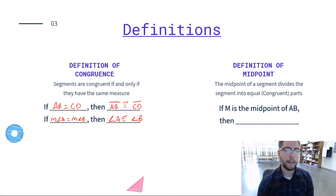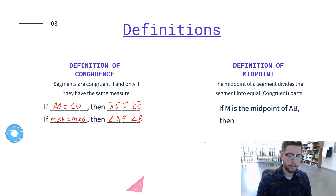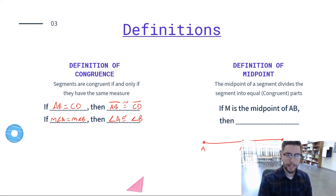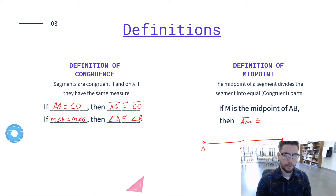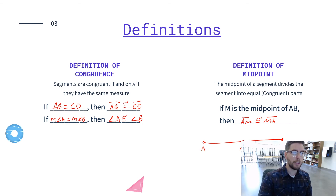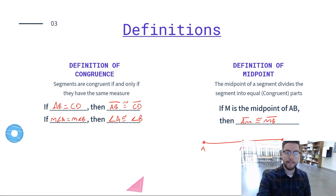Definition of Midpoint: the midpoint of a segment divides it into two equal, congruent parts. If M is the midpoint of AB — picture A, then M in the middle, then B — we can say AM is congruent to MB. And if you need to talk about their lengths, you use the Definition of Congruence in reverse: because they're congruent, AM equals MB.